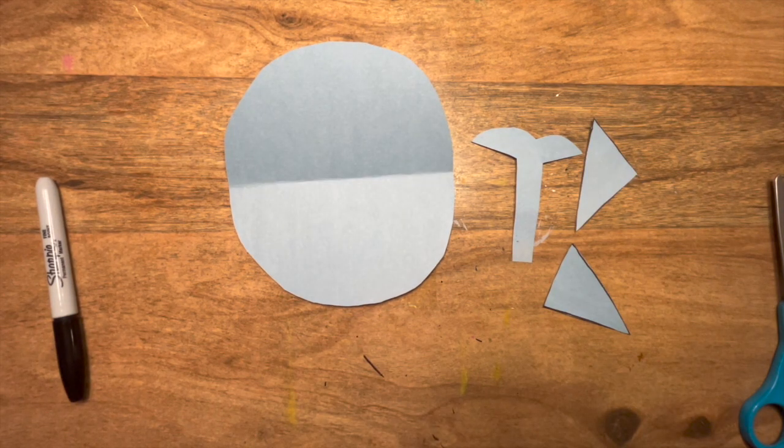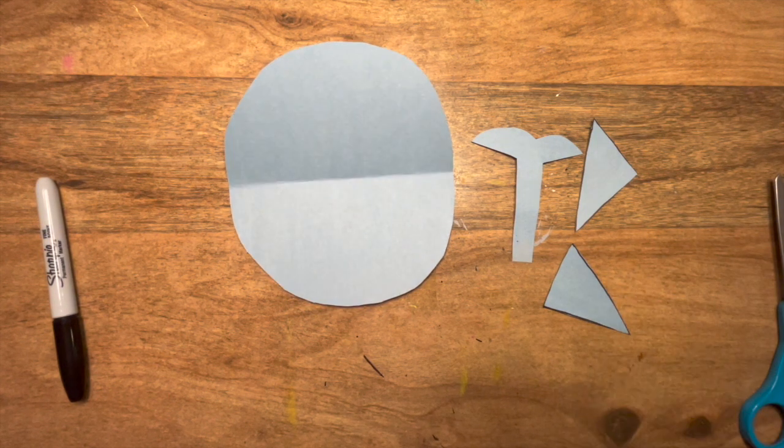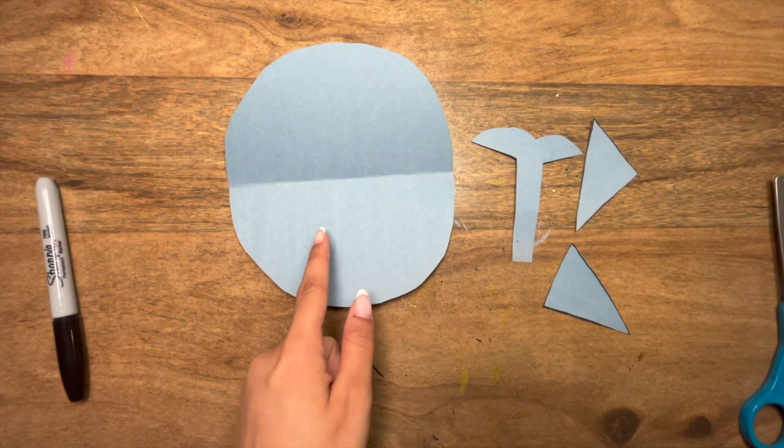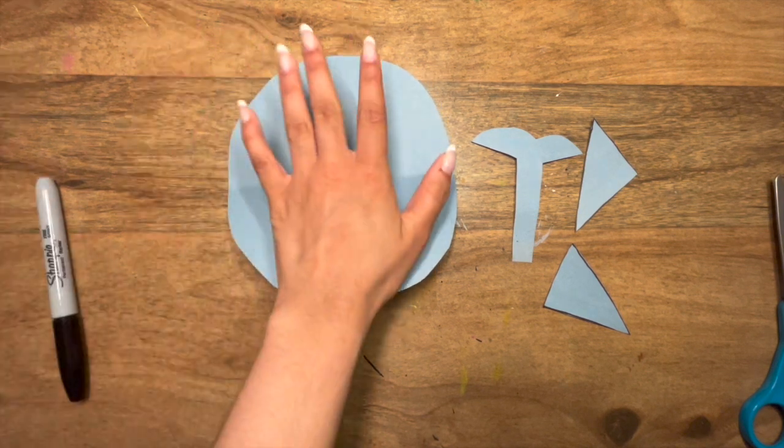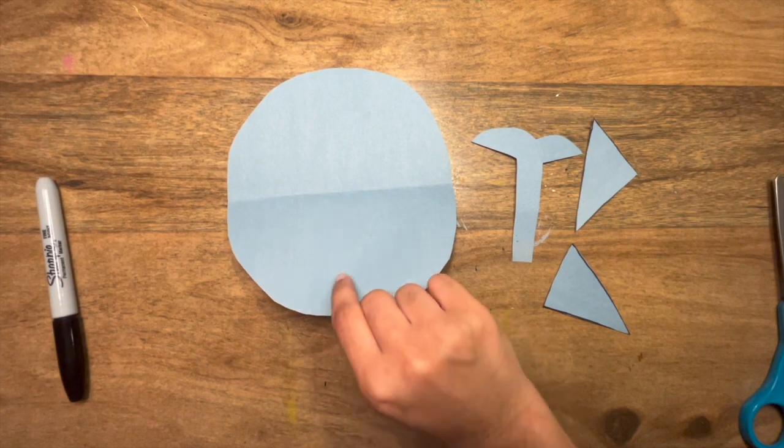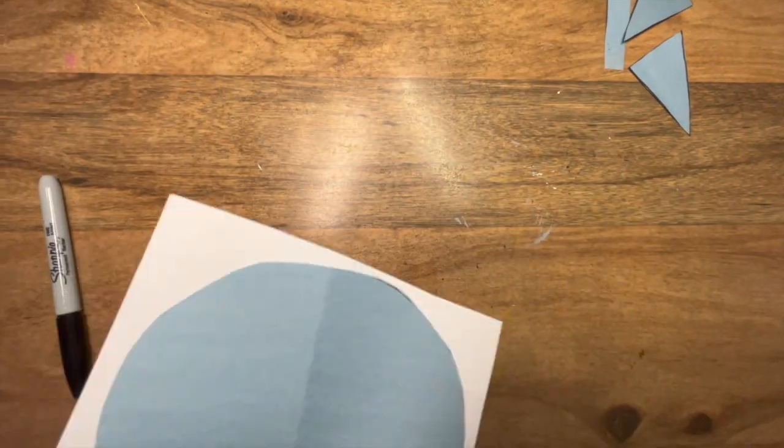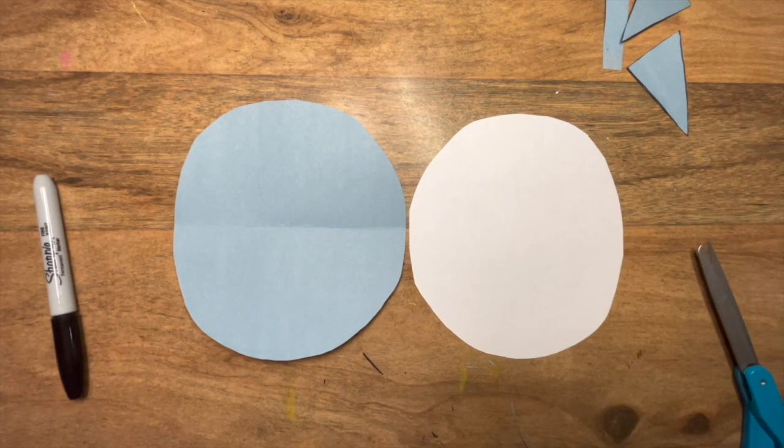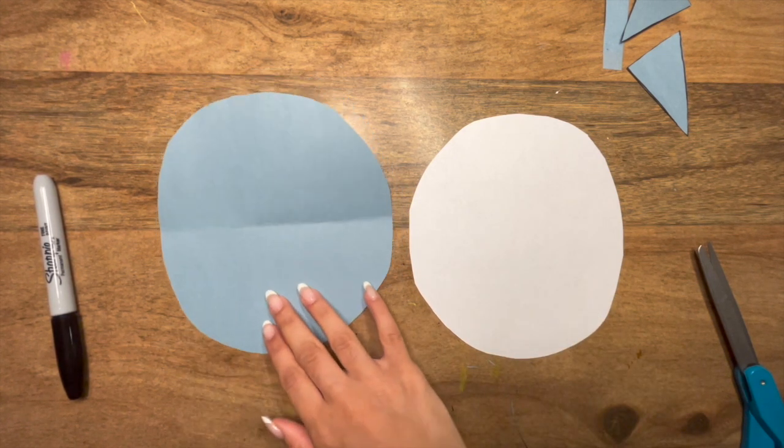Alright, here are my cut out shapes. The circle, the tail, and the two fins. Now, using one of the blank papers, cut a circle that is the same size as this blue circle. So all we're going to do is just going to take our blank paper, put it over this, and cut around the edges of this blue circle. Like so.